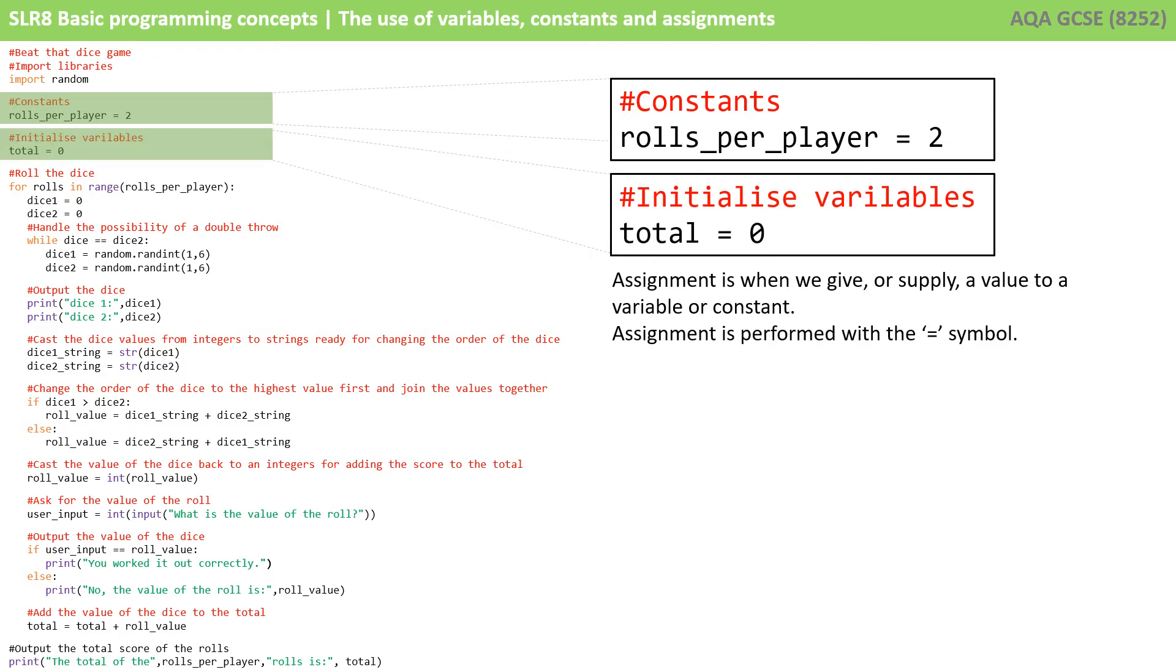Assignment is simply when we give or supply a value to a variable or constant. So in both the previous lines of code we've looked at, we are supplying a value to a variable or a constant. An assignment is performed with the equal symbol. You assign the value on the right of the equal symbol to the variable or constant on the left.